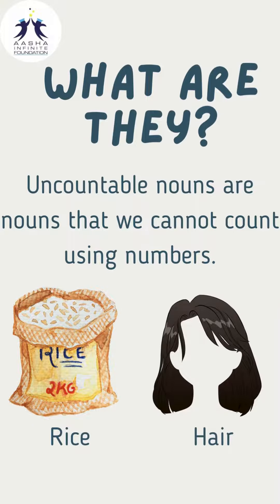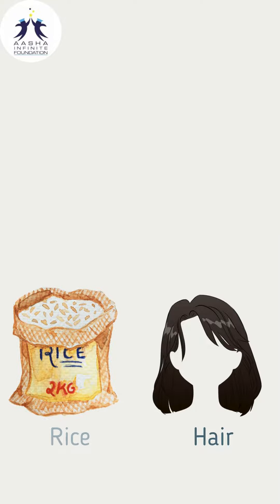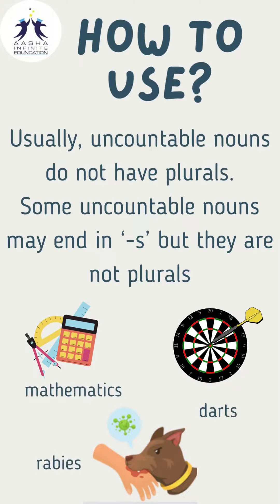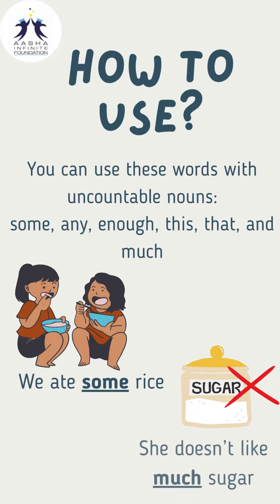Uncountable nouns are nouns that we cannot count with numbers, for example rice or hair. Usually uncountable nouns do not have plurals. Some uncountable nouns may end in -s but they are not plurals, for example mathematics, darts, or rabies. We can use these words with uncountable nouns, for example: we ate some rice, or she doesn't like much sugar.